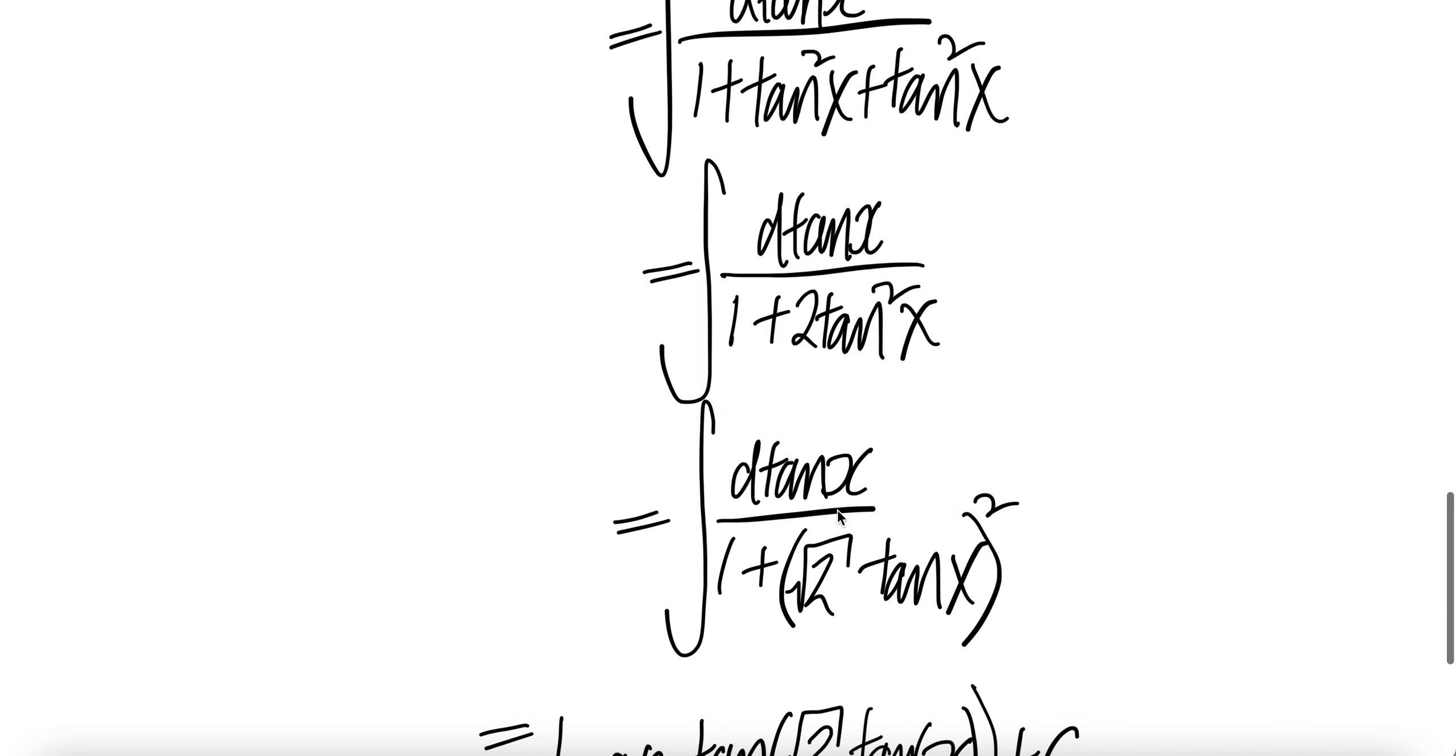Push this into the square. You get square root 2. Tangent x square. Square of tangent x is tangent squared x. Square of square root 2 is 2.